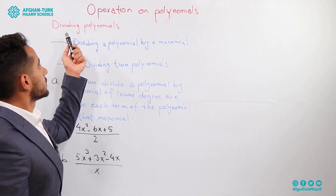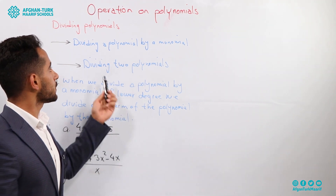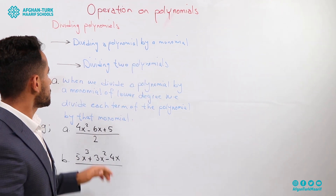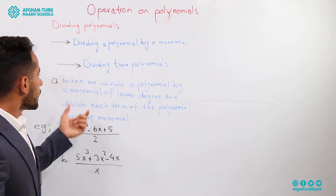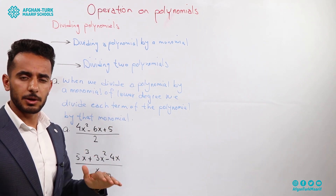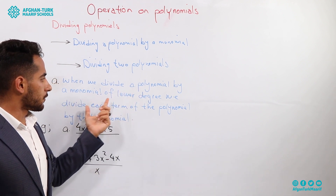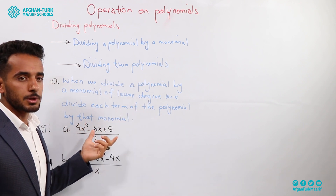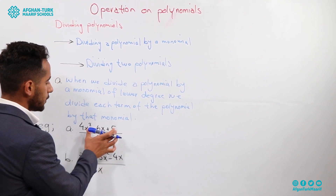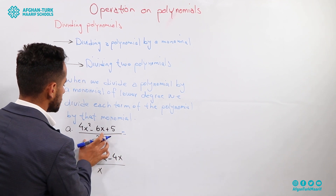Now for the final operation: dividing polynomials. In this operation we have two types of questions. First, dividing a polynomial by a monomial, and second, dividing two polynomials. We are going to start with the first type. When we divide a polynomial by a monomial of lower degree, we divide each term of the polynomial by that monomial.